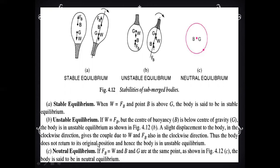Thus, the body does not return to its original position and hence it is in unstable equilibrium. The third condition is neutral equilibrium: if FB is equal to W and B and G are at the same point, as shown in the figure, then the body is said to be in neutral equilibrium.